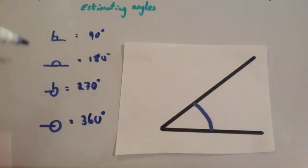Then if you know what these are, then you can have a sensible estimate of angles that might be less than 90, less than a straight line, or slightly over a straight line, and so on. So let's look at this angle and estimate the size of it.